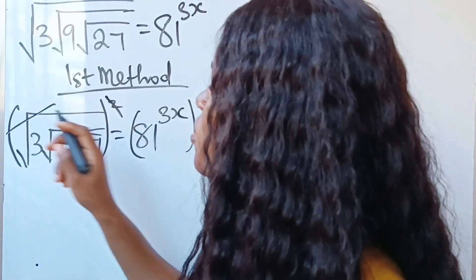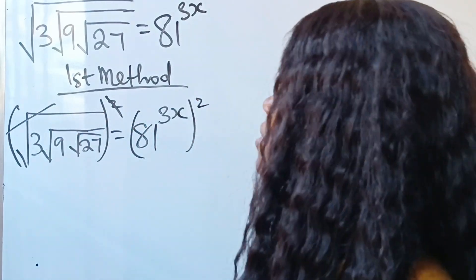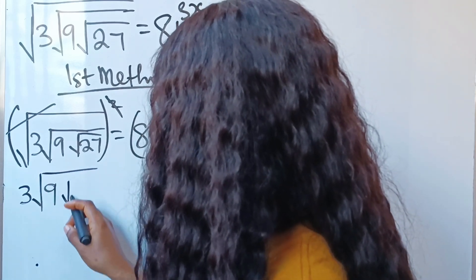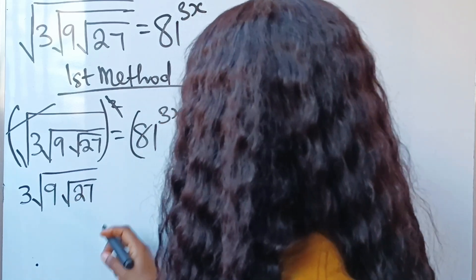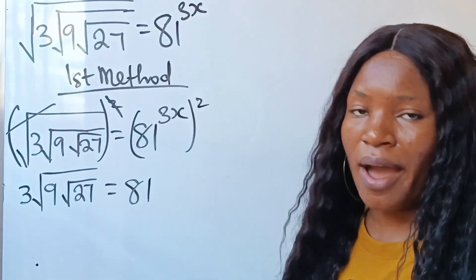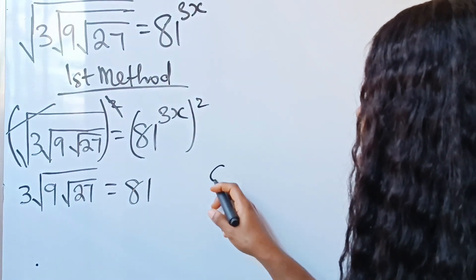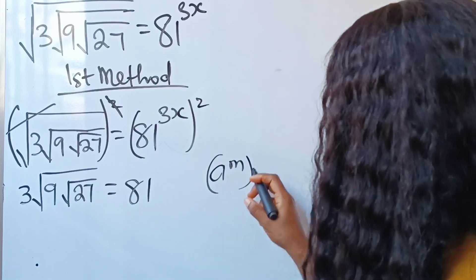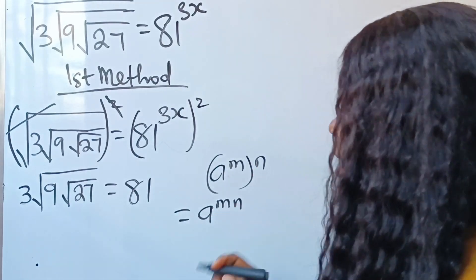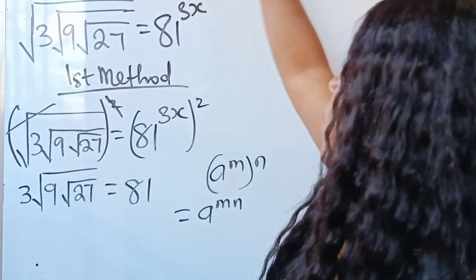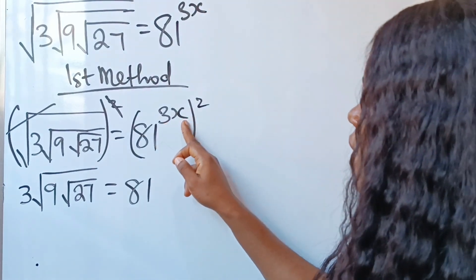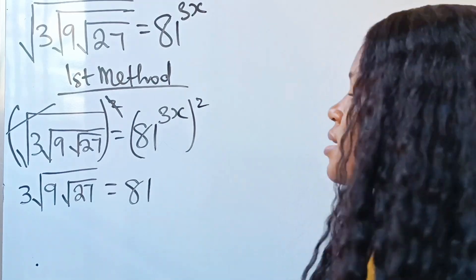Squaring will remove the square root sign. So we are left with 3, square root of 9, square root of 27, is equal to 81 raised to the power of — now, when you have a to the power of m raised to the power of n, this equals a to the power of m times n — so this gives us 6x, since 3x times 2 gives us 6x.